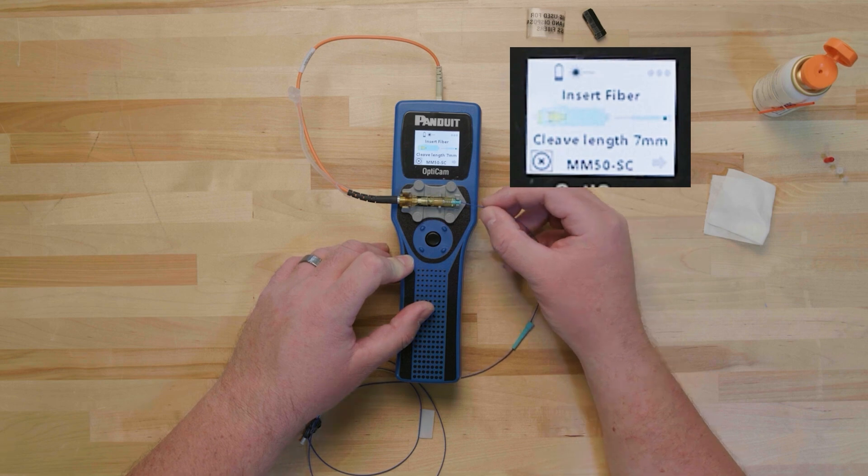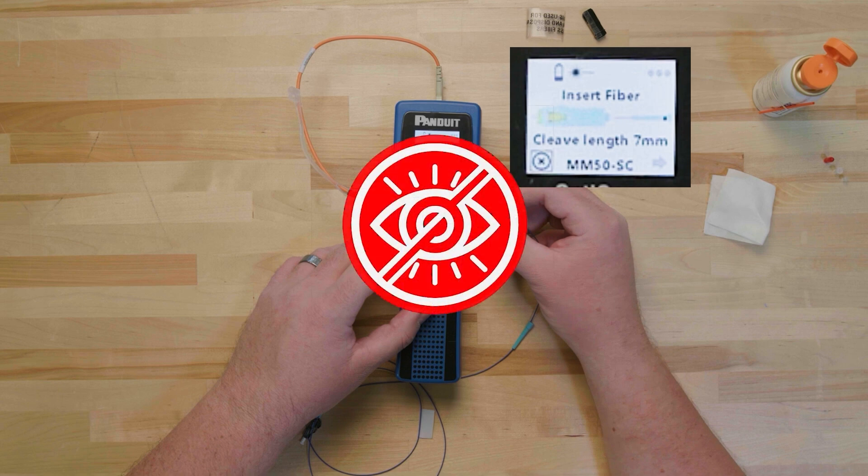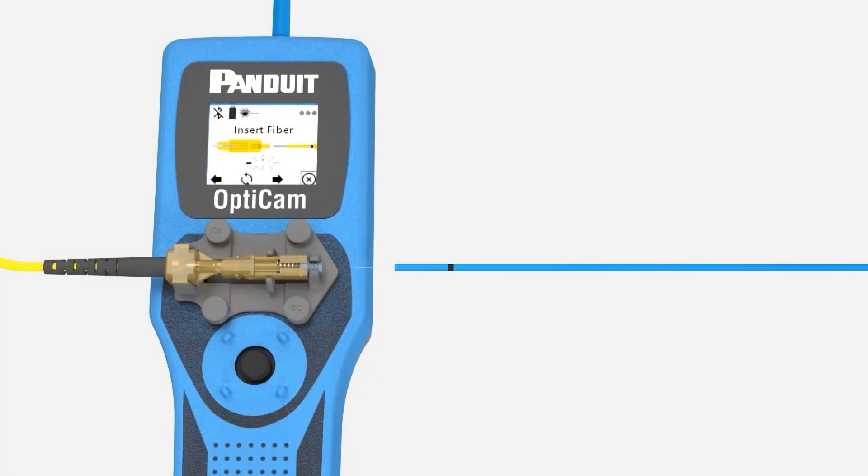Once the screen reads insert fiber, insert the fiber into the connector, ensuring that the fiber goes into the inner insertion tube of the connector. Warning, do not look directly into the connector when lining up the fiber with the insertion tube. Even though it is not visible, there is an active laser present. Gently advance the fiber until it stops, indicating it is mated with the fiber inside the connector.